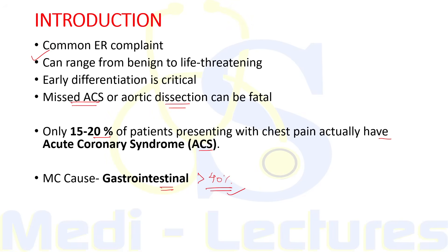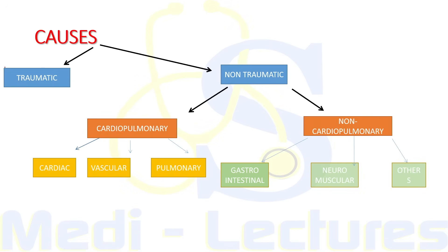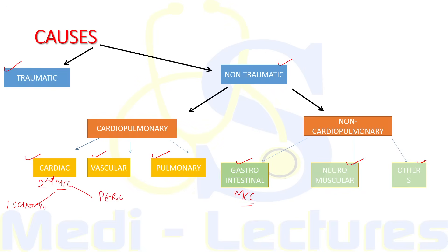Causes of chest pain can be due to trauma or non-traumatic causes. Non-traumatic causes include cardiopulmonary causes — cardiac, vascular, and pulmonary — and non-cardiopulmonary causes including gastrointestinal, neuromuscular, and others. The most common cause of non-traumatic chest pain is gastrointestinal, followed by cardiac causes as the second most common. Among cardiac causes, chest pain can be due to ischemia, infarction, or pericarditis.